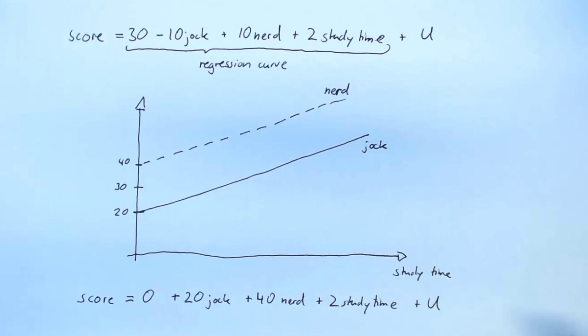But this is exactly what the full rank assumption is supposed to rule out: that you can write down two different coefficient specifications and still get the same regression curve. So let's look at the full rank assumption in more general terms.